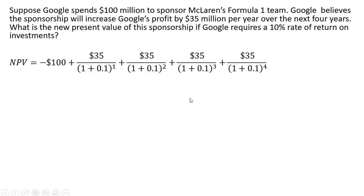The net present value is going to equal the following. We have this minus $100 million cash flow at time zero. This represents the payment from Google to McLaren for their sponsorship to get their name on their car. Google believes the sponsorship will increase its profit by $35 million per year due to the advertising effect — so $35 million at the end of each of the next four years. That's what these four payments represent, and then we're going to discount each one of these payments.